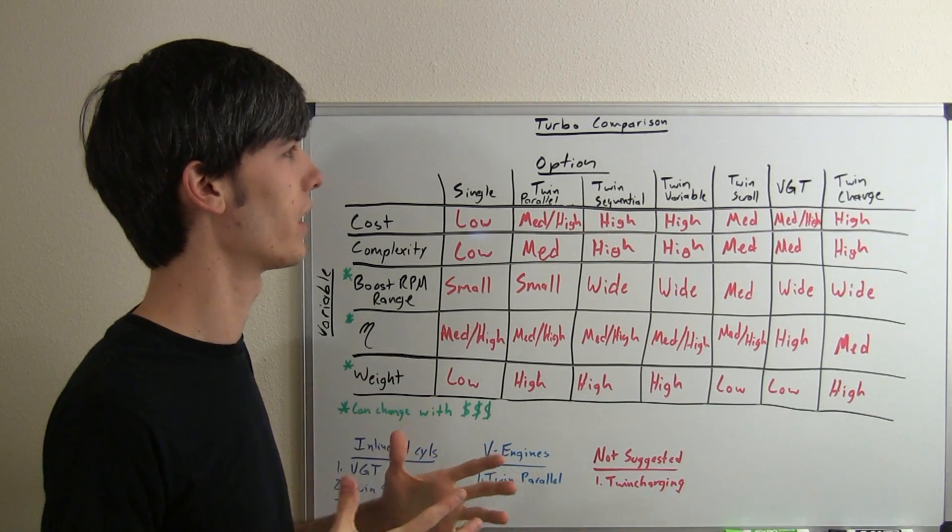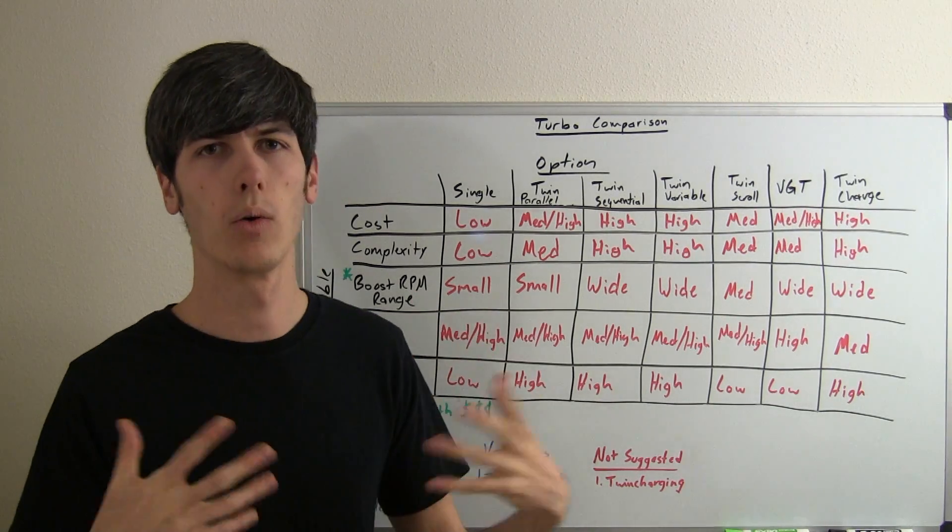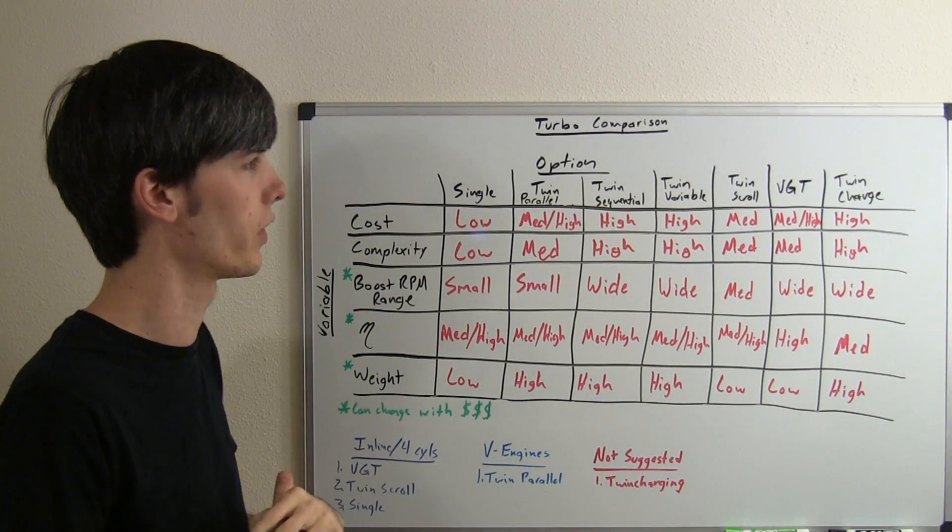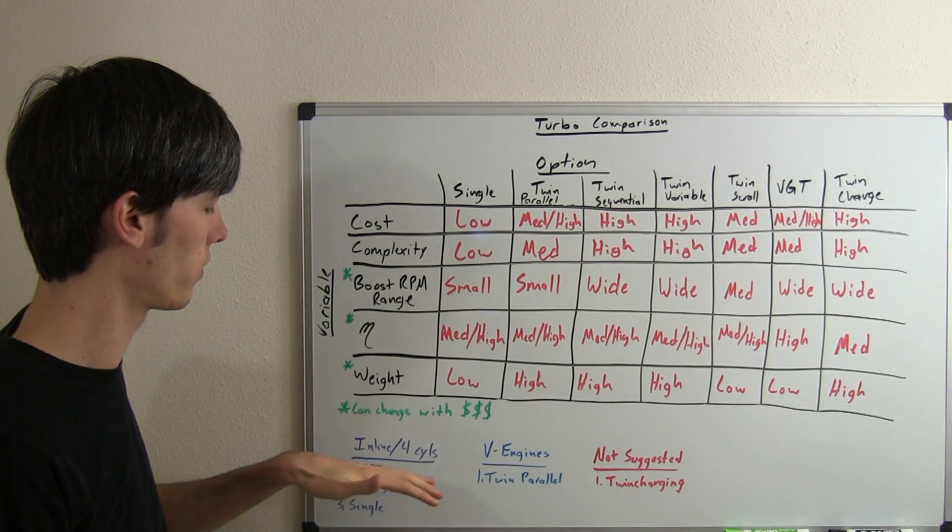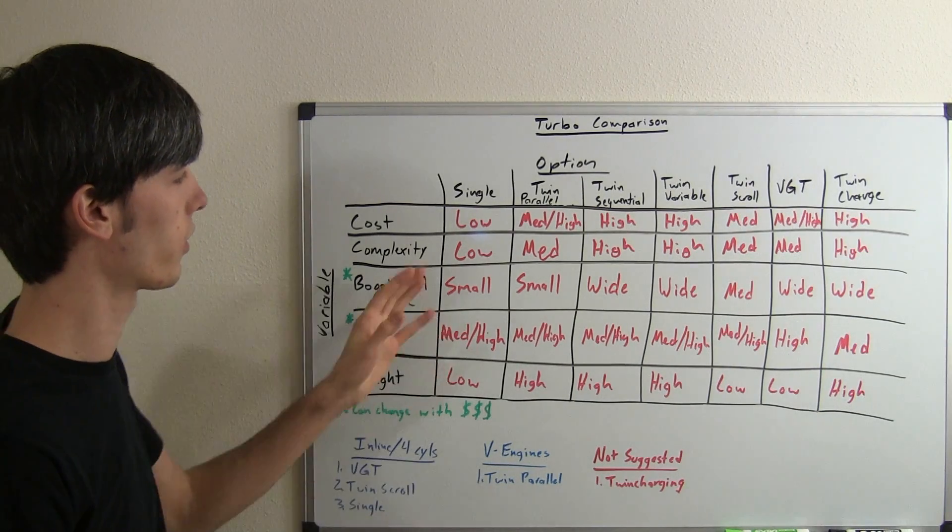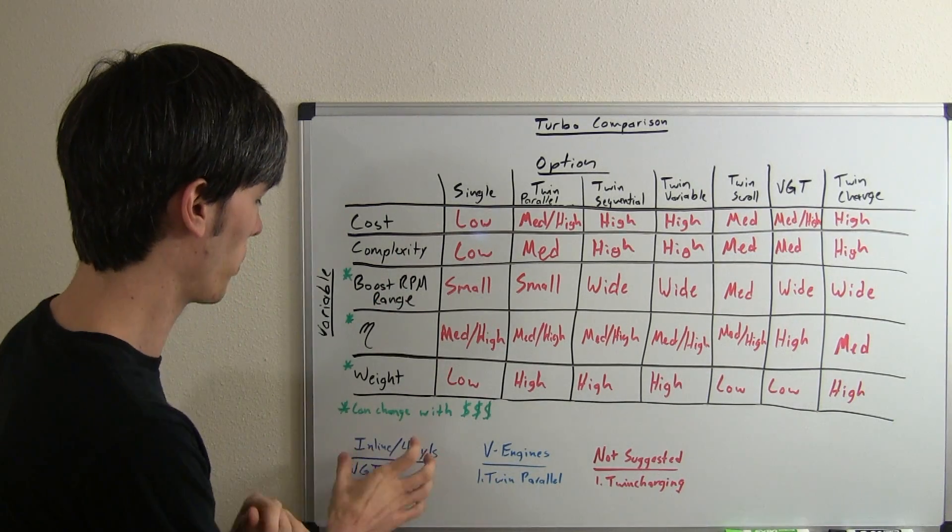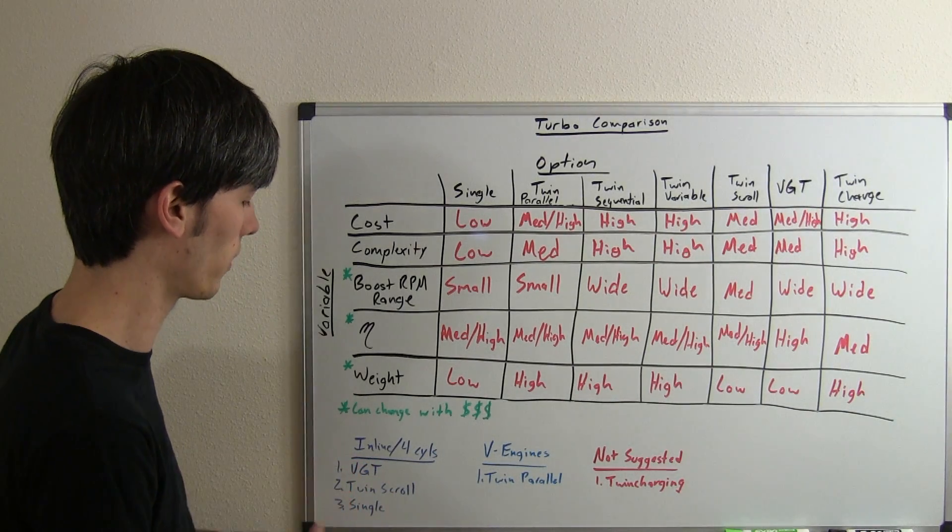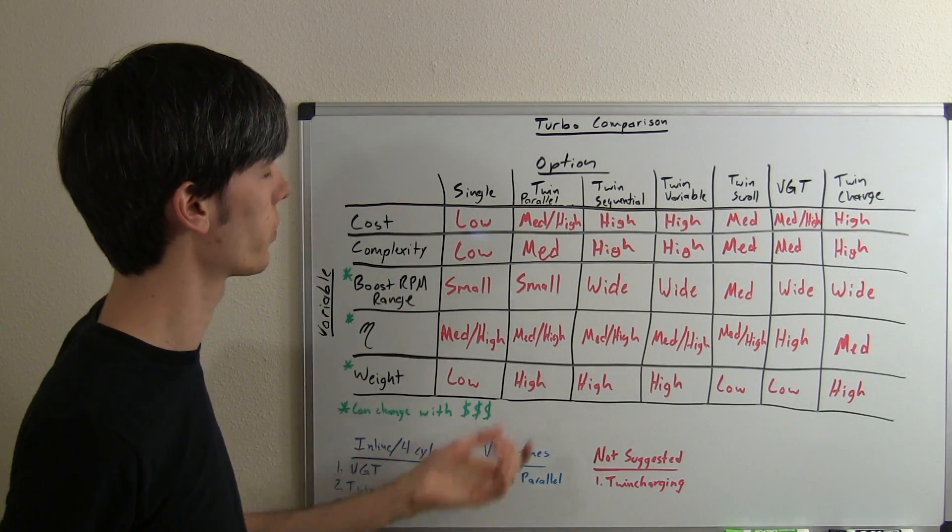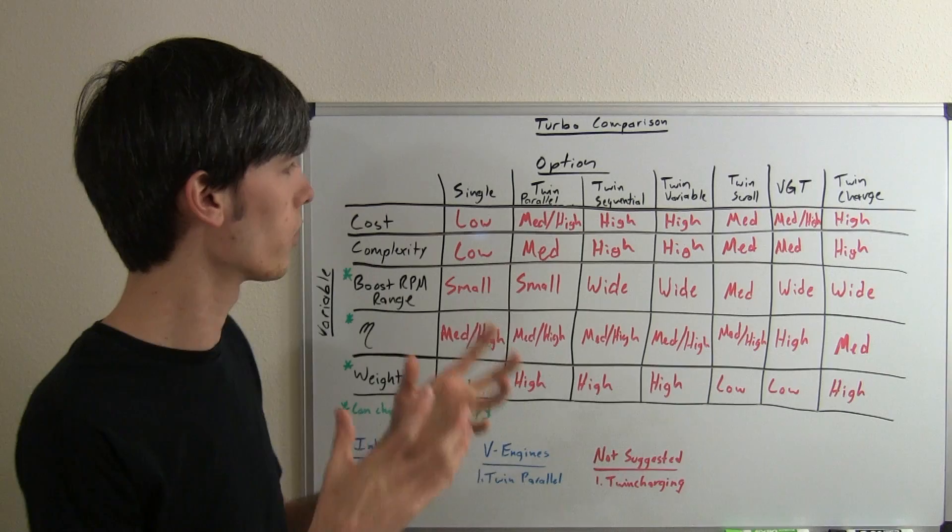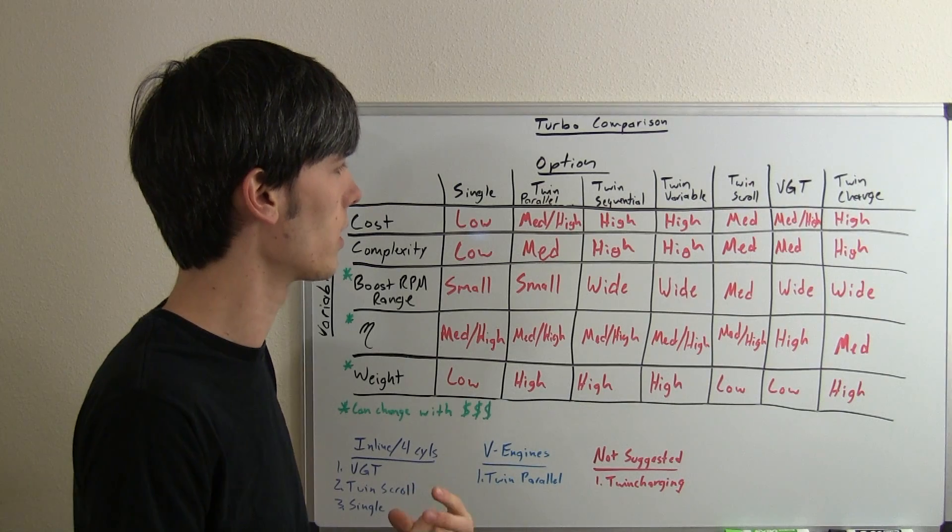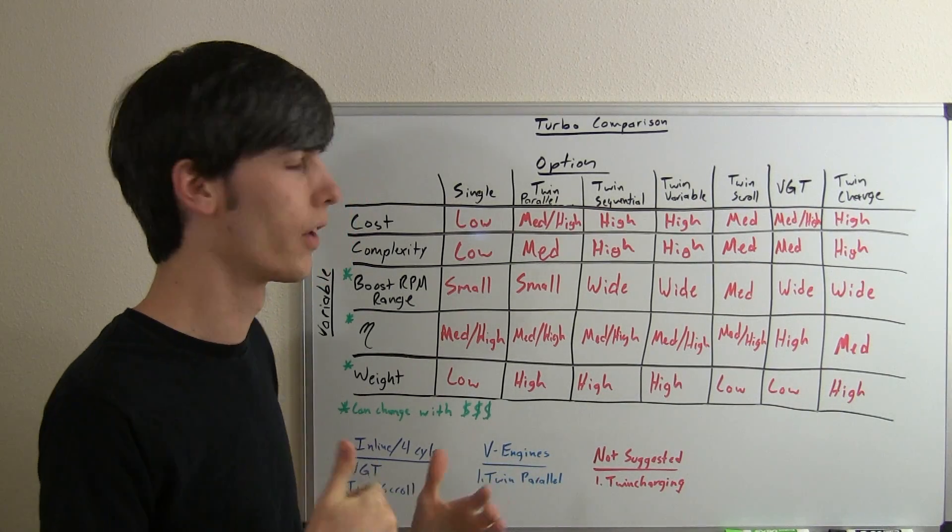So I kind of came up with some recommendations because a lot of people at the end of this are going to say, okay, well, which one would you pick? So if you're looking at for like an inline or a four-cylinder engine, I think the best option to go with is the VGT, second to the twin scroll, and then third to just a single regular turbo. The reason I say that is just based on cost. So wherever you come on cost, that's what I'd say is your best options. V-engine, if you do have a V-engine, I would just go with the twin parallel. Two good single turbos, one for each side, and that's a really solid system. Not that complex. Cost is relatively low compared to some of the other options. So that's what I would recommend.